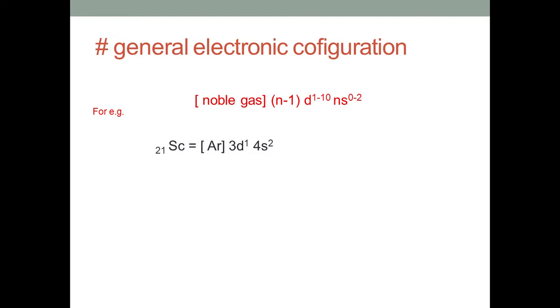For example, scandium with atomic number 21 has the configuration argon 3d^1 4s^2. One electron in d and two electrons in 4s. In this way you can write the electronic configuration from 21 to 30 for d-block elements ending at zinc. Now there is a question: can you give the name of the element which has s^0 configuration?